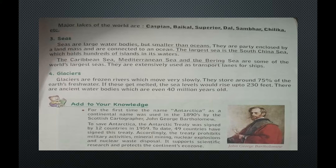Seas are large water bodies, but smaller than oceans. They are partly enclosed by a landmass and are connected to an ocean. The largest sea is the South China Sea, which holds hundreds of islands in its waters. The Caribbean Sea, Mediterranean Sea and the Bering Sea are some of the world's largest seas. They are extensively used as transport lanes for ships.